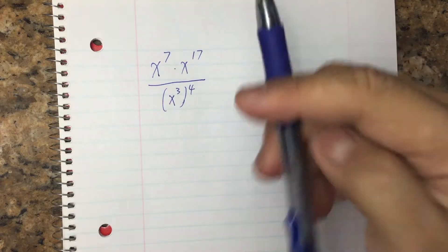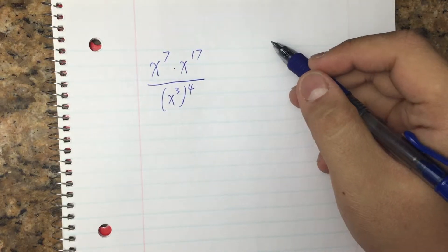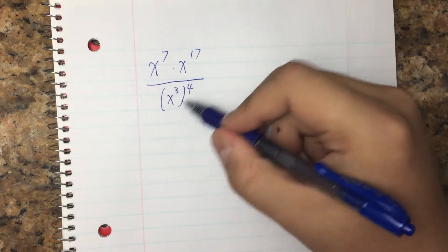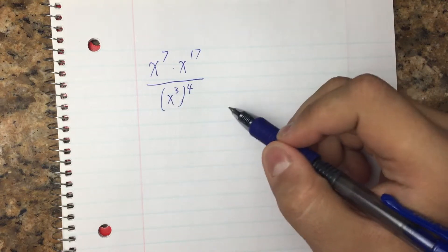This question: x to the 7 times x to the 17 divided by x to the 3rd power raised to the 4th power.